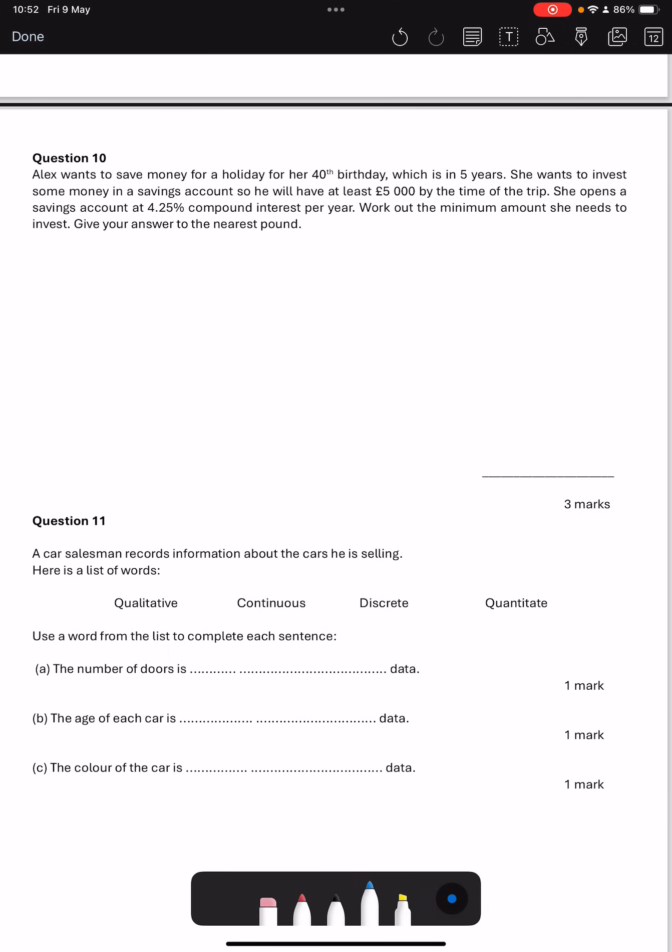Question 10. Alex wants to save money for a holiday for her 40th birthday which is in 5 years. She wants to invest some money in a savings account so they'll have at least 5,000 by the time of the trip. She opens the savings account of 4.25% compound interest. When I do compound interest the amount that we get at the end is always equal to the multiplier to the power of years. So we're increasing its interest. My multiplier is going to be 100% plus 4.25% which is 104.25% and then we divide that by 100 to change it to a decimal 1.0425.